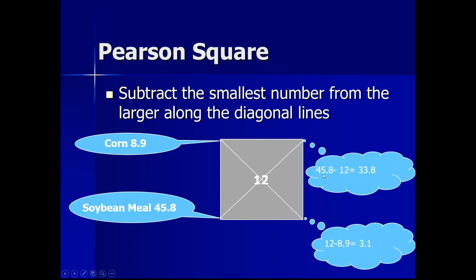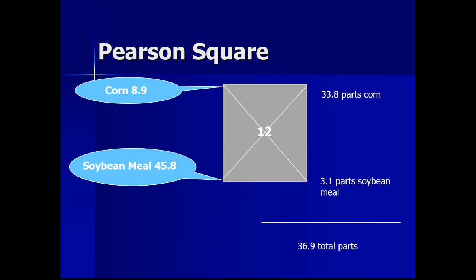You can subtract in either direction — ingredient value minus required value, or required value minus ingredient value. If you get a negative sign, just ignore it. So 8.9% minus 12 gives 3.1 (use absolute value), and 45.8% minus 12 gives 33.8%.